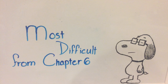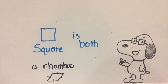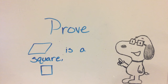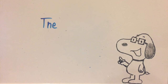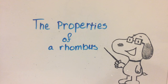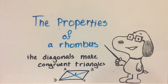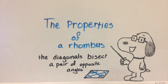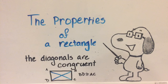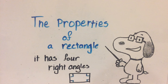The most difficult concept of Chapter 6 is proving a parallelogram is a square. A square is both a rhombus and a rectangle. To prove a parallelogram is a square, it needs to have the properties of a rectangle and the properties of a rhombus. The properties of a rhombus are that the diagonals are perpendicular, they make congruent triangles, and they bisect a pair of opposite angles. A rectangle has congruent diagonals, diagonals that bisect each other, and four right angles.